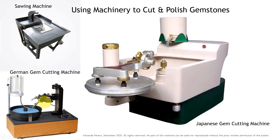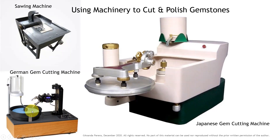This is called the faceter. With this faceter we can rotate the angles — we will learn more about that later. This is the axis going up and down to touch the stone to the lap or release it. We can move this up and down. This is the German method.